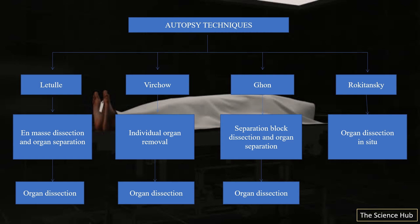The Virchow technique sees organs removed one by one, starting at the cranium and moving down to the thoracic, abdominal, and cervical organs — essentially a top-down approach. The Ghon technique is similar to Rokitansky in that thoracic, cervical, and abdominal organs are removed using the block method, but the Ghon technique does not employ in-situ dissection, instead opting for en bloc removal.